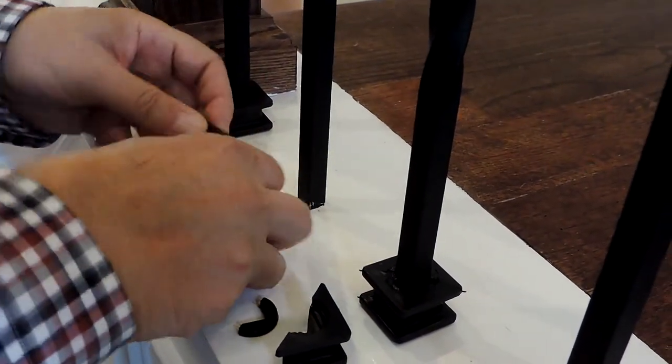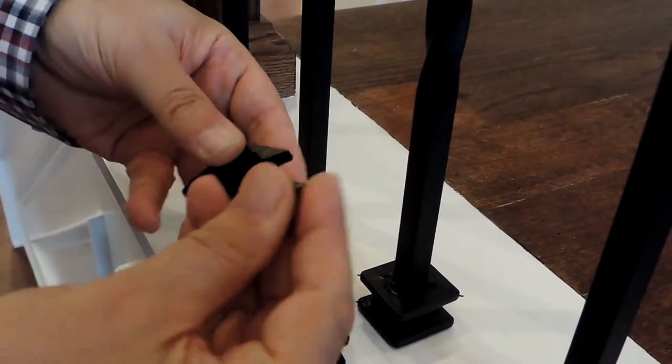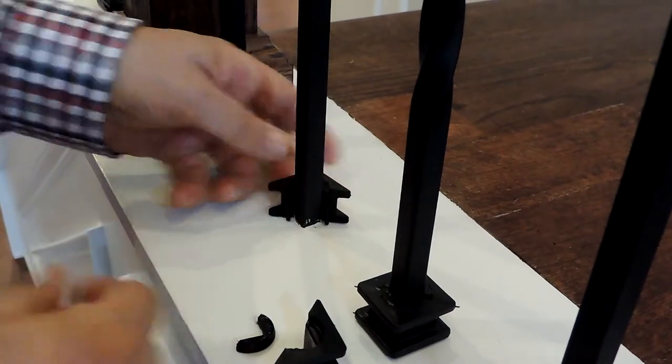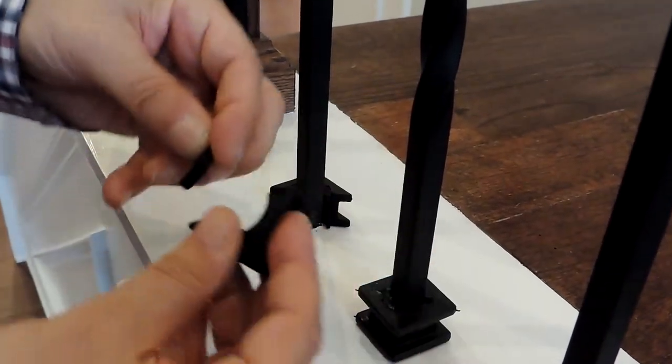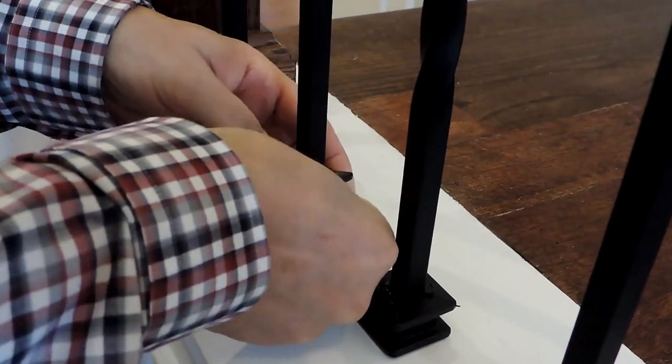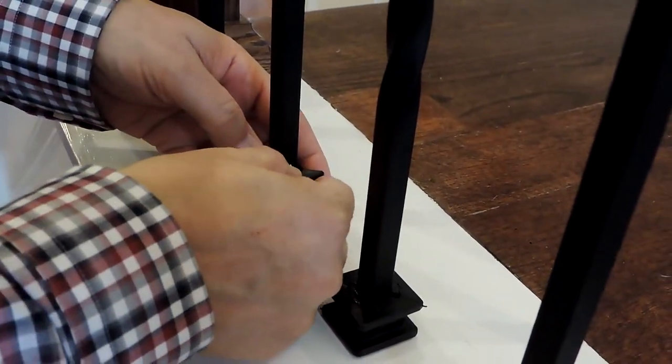So to start off, you take the male baluster with the half moon lock and you place it in position. Then you take the female baluster with the half moon lock and you raise it above the male.